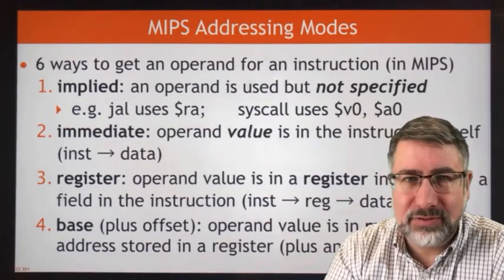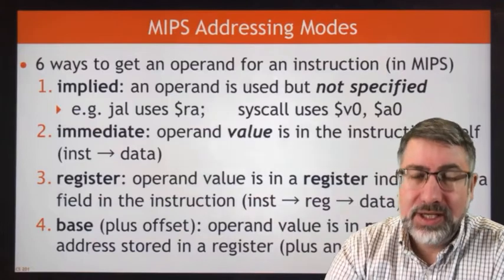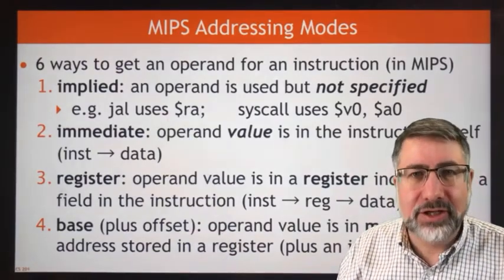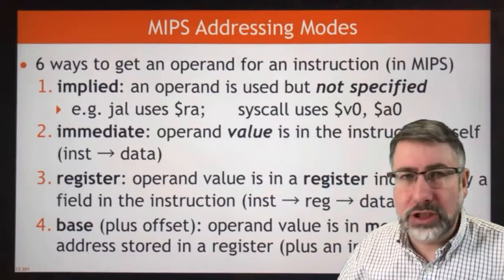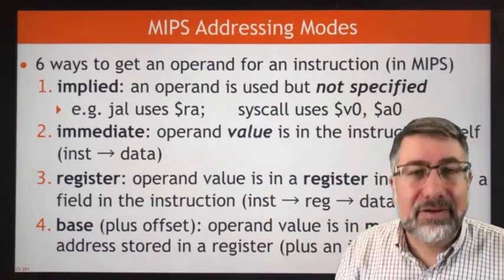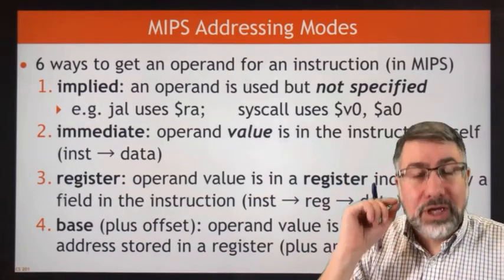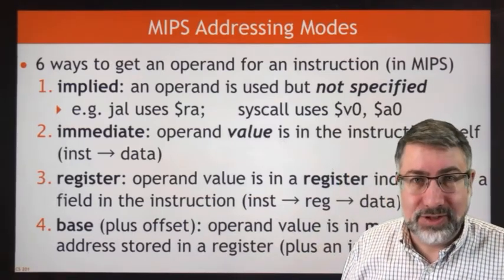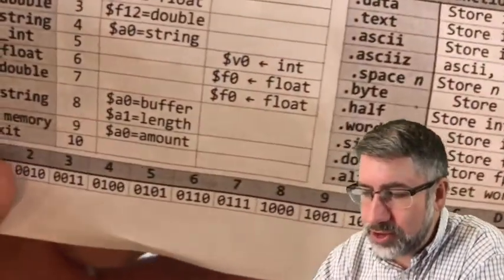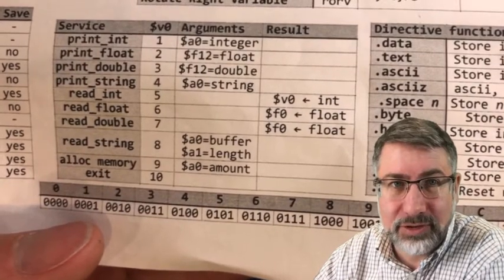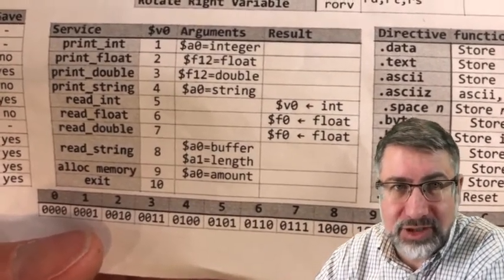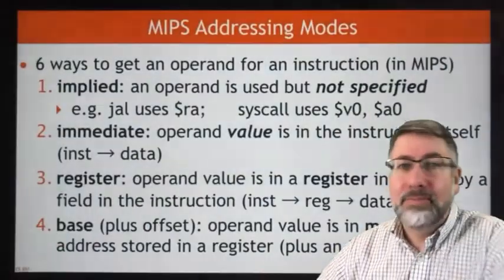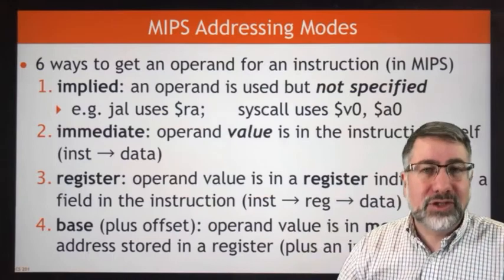Implied means that we don't actually specify which register or where the data is — it's implied in the instruction itself. For example, syscall doesn't have any operands. We just say syscall, but we know that the operating system is going to check V0 and A0 when it executes the system call. V0 contains some number that indicates the request, but we don't say 'syscall V0' — we just say syscall, and V0 is implied.